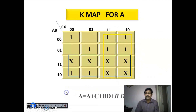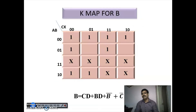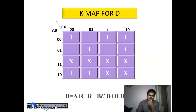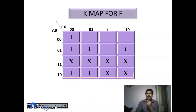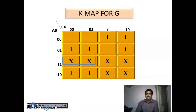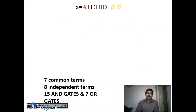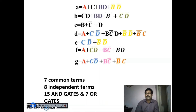After grouping, we write the expression for small-a. Similarly we derive expressions for b, c, d, e, f, and g using the same K-map approach. After writing all expressions, we collect them all together.